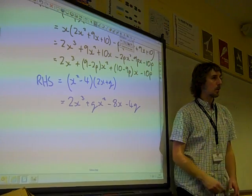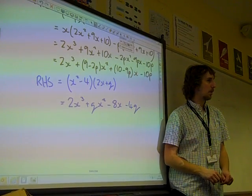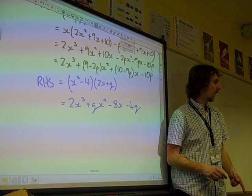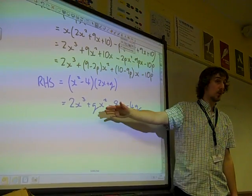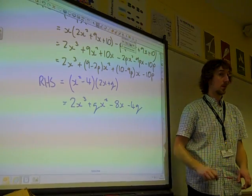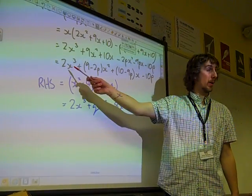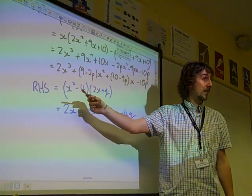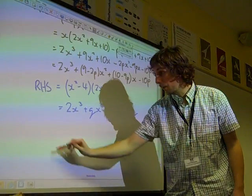And then do you remember what we would do with this now? We want to compare coefficients. So if these two sides are equal to each other, there should be the same number of x cubed on both sides. Well, there are. There's 2x cubed and 2x cubed. There should be the same number of x squareds on both sides.